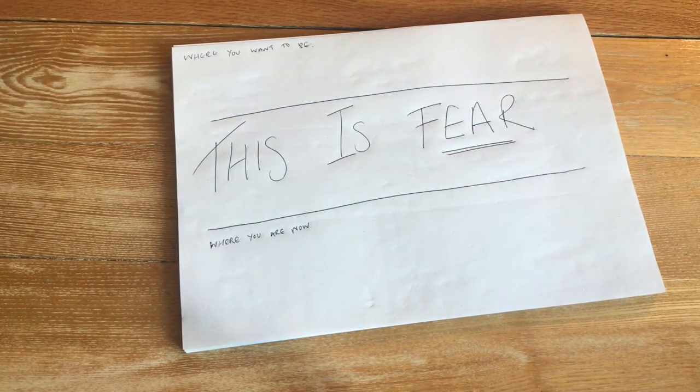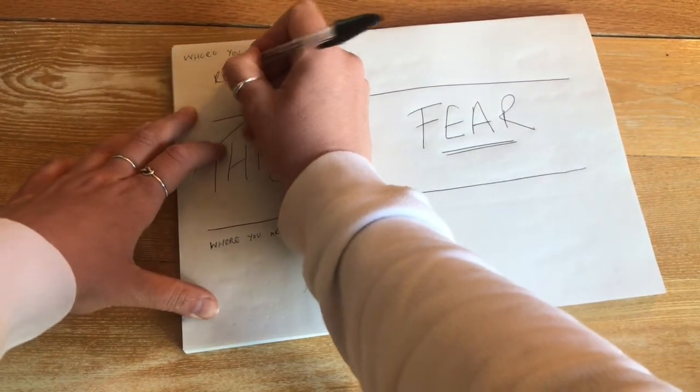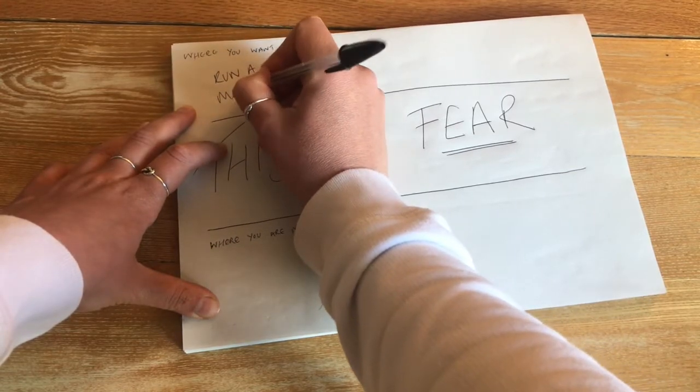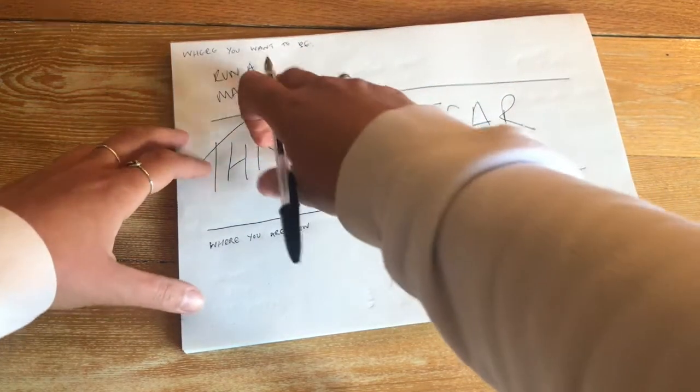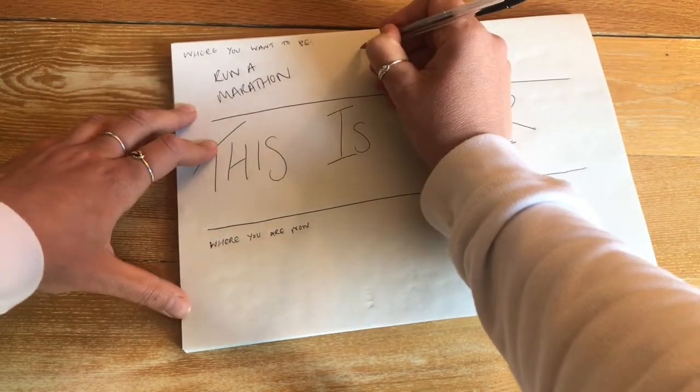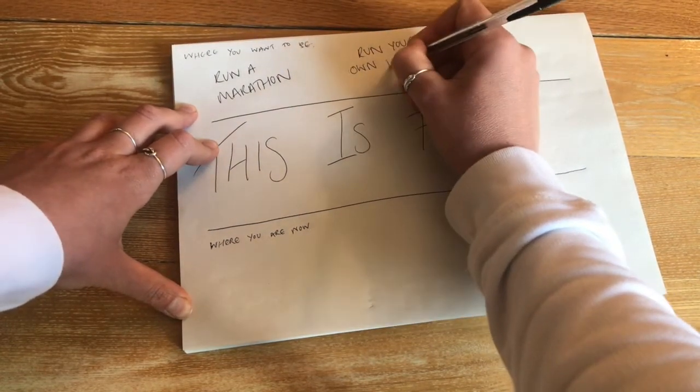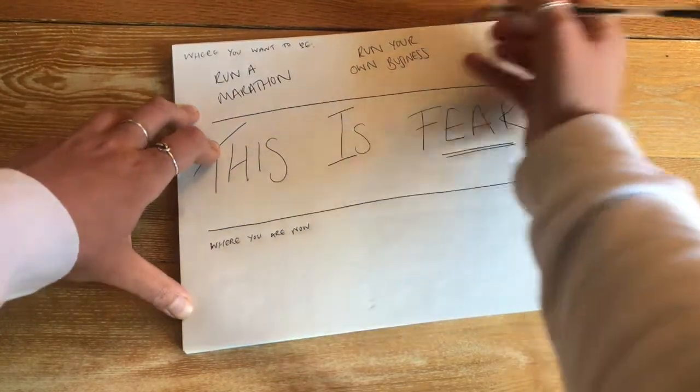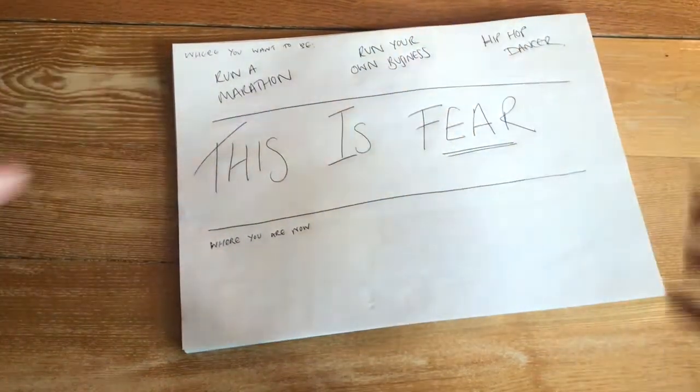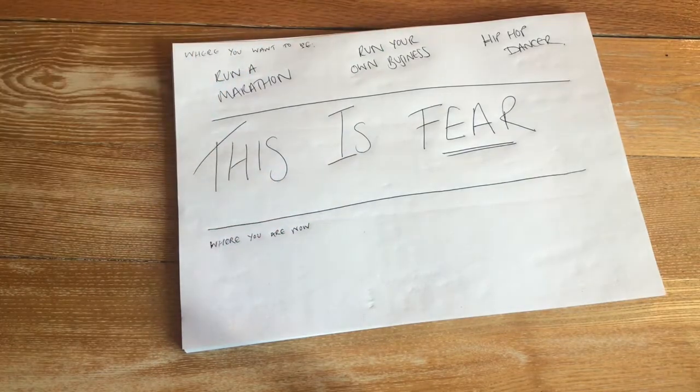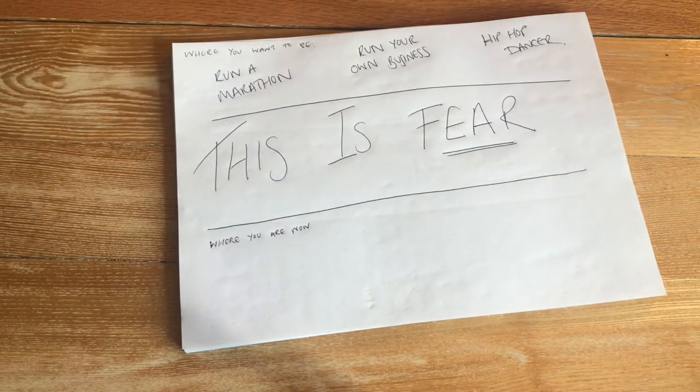So let's take some examples. Let's say where you want to be is you want to run a marathon. I mean how cool would that be? This was one of my dreams for ages. Run a marathon. What about you want to run your own business? You want to be a hip-hop dancer. So there we have three things where you want to be. You want to run a marathon, you want to run your own business, and you want to be a hip-hop dancer.